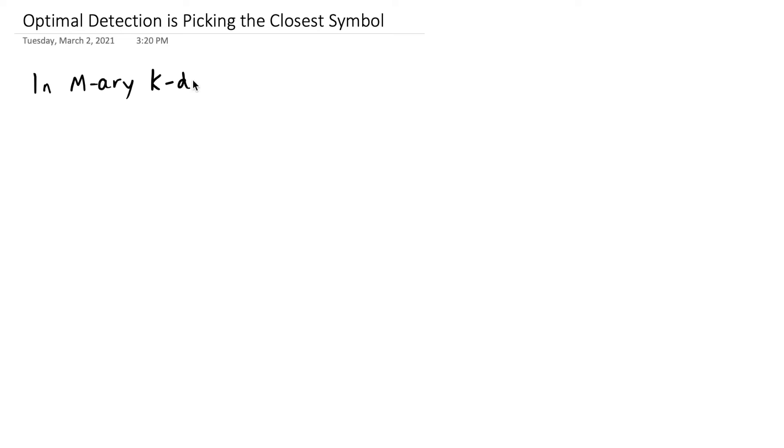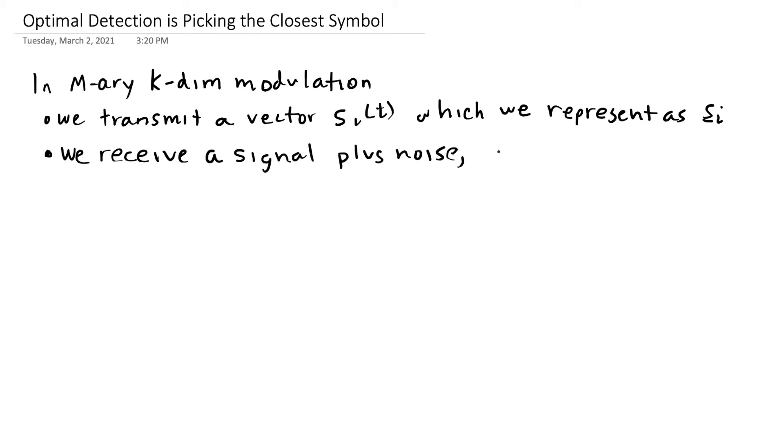Remember these four things. In M-ary k-dimensional modulation, we transmit a signal Si, which we represent as a vector Si. We receive a signal plus the noise, which after the match filter and sampler is equal to x, and it's Si plus W.